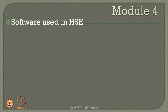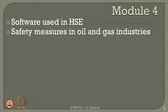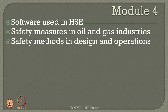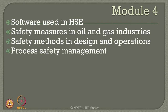Before going into detail, let us quickly see what are the topics we will be discussing in the 4th module. We will talk about use of software in HSE, safety measures as a summary in oil and gas industries, safety methods which can be used and implemented in the design stage itself and during operational stages. We will also talk about a summary on process safety management, which has been covered in detail in earlier modules.